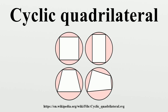Usually the quadrilateral is assumed to be convex, but there are also cross-cyclic quadrilaterals. The formulas and properties given below are valid in the convex case. The word cyclic is from the ancient Greek word meaning circle or wheel.